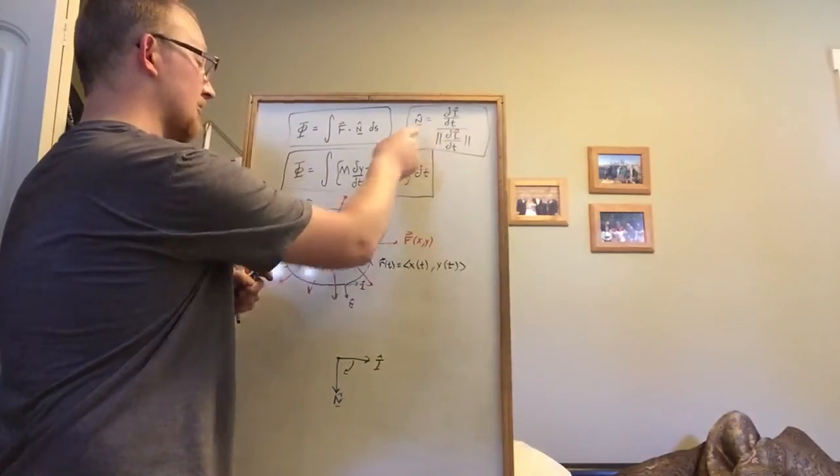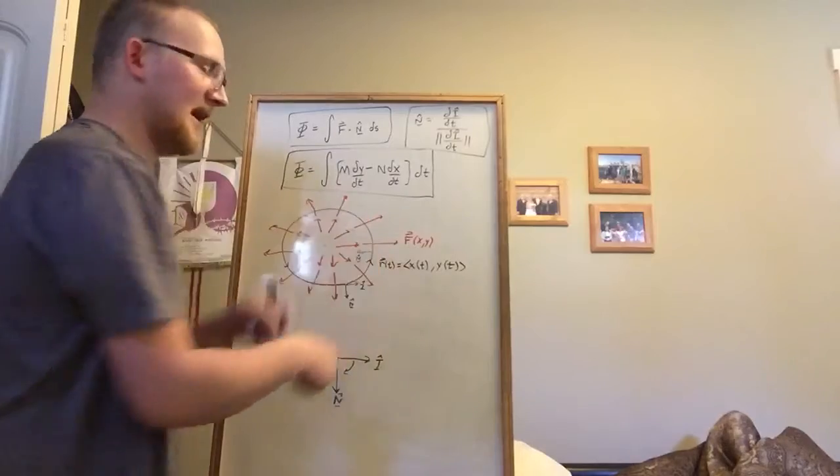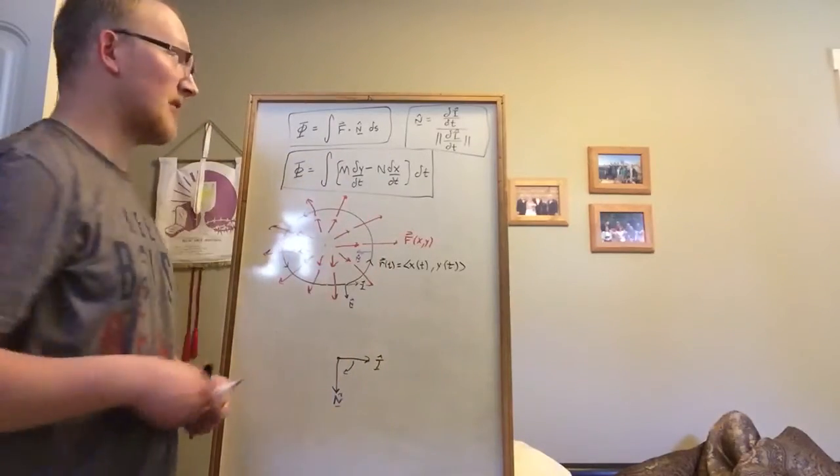if we use this definition for the unit normal, we would end up with negative flux when we were supposed to get positive flux, or vice versa.